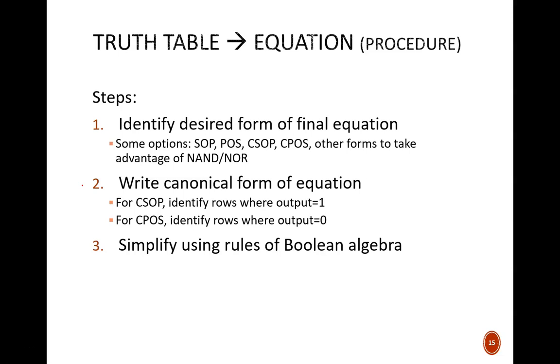with SOP, focus on the ones in the truth table. In POS, focus on the zeros. Once the canonical form is written, we sometimes stop there, but more often we want to simplify. This can be done using the rules of Boolean algebra.